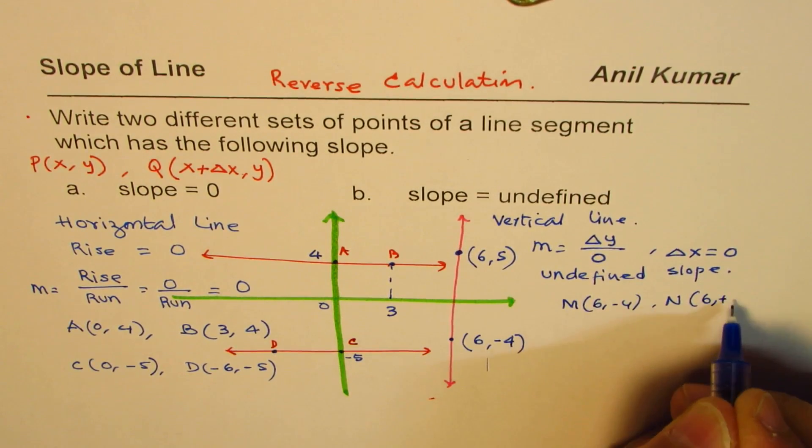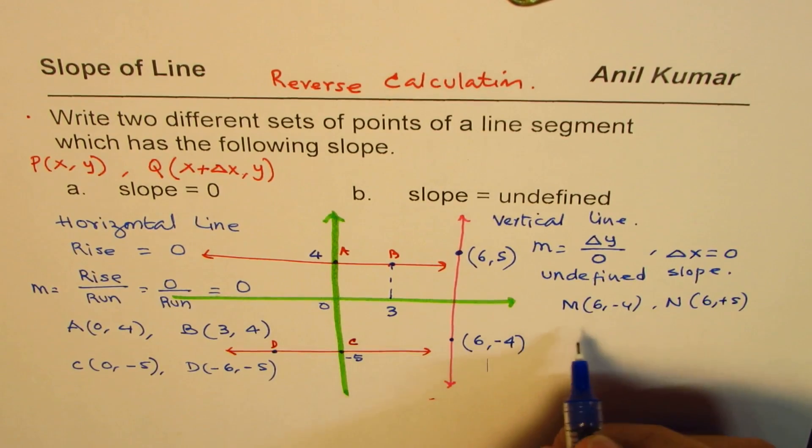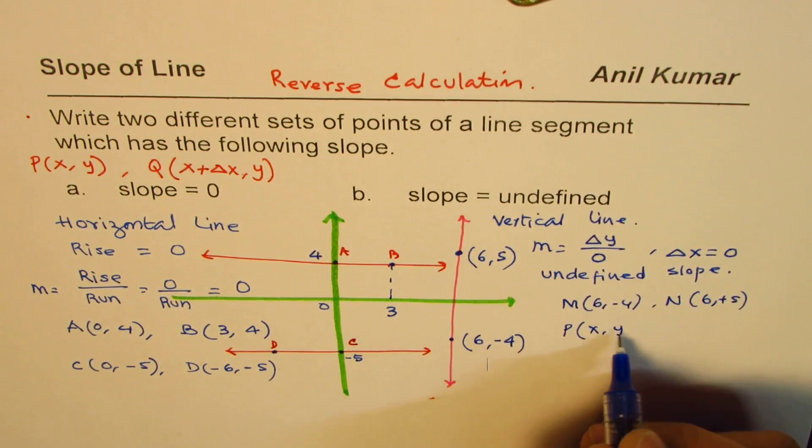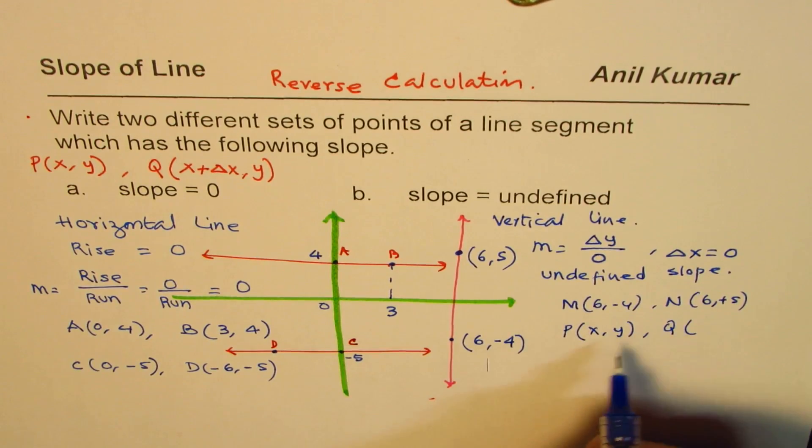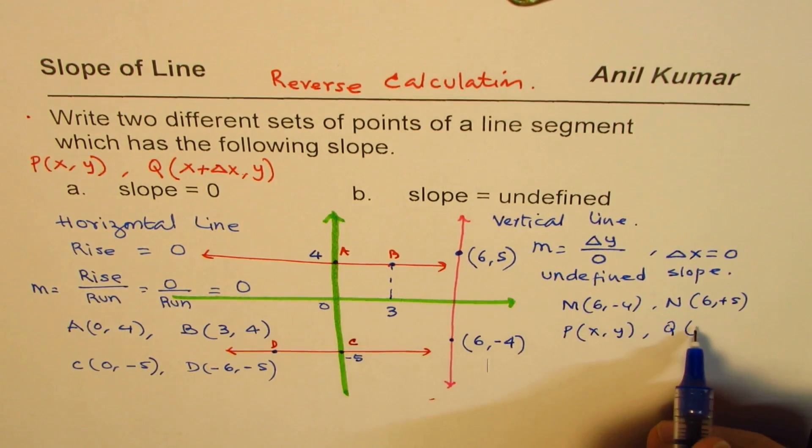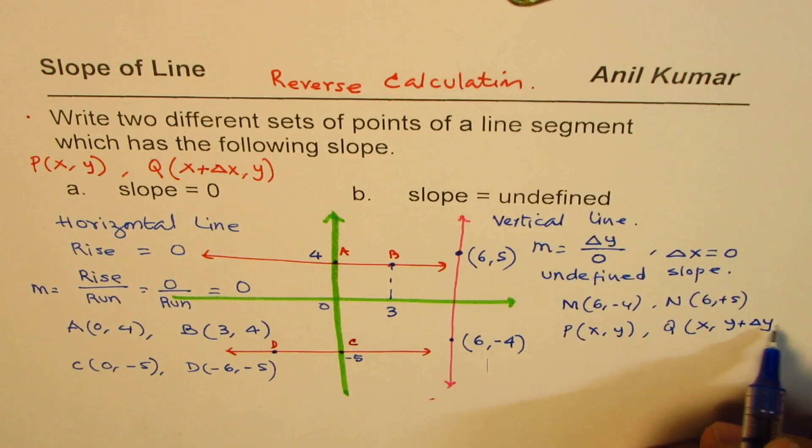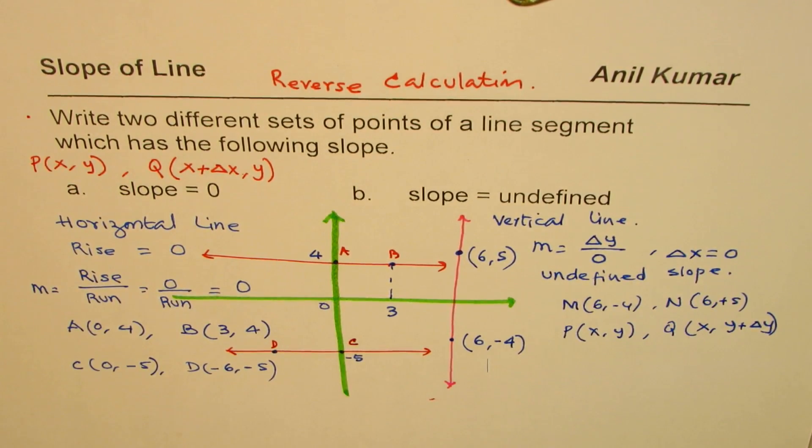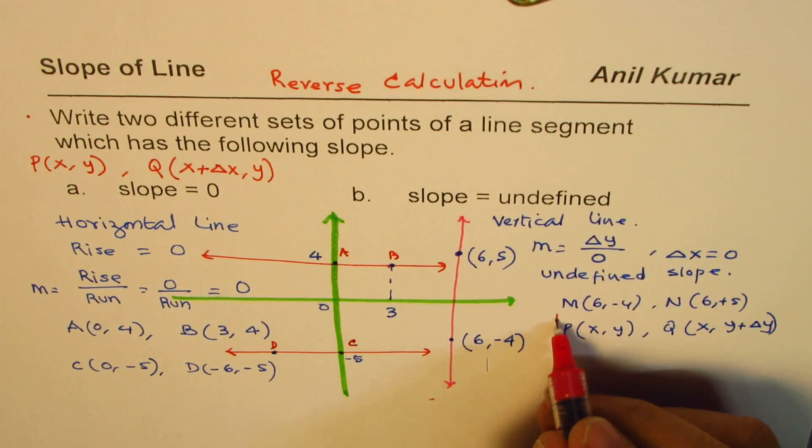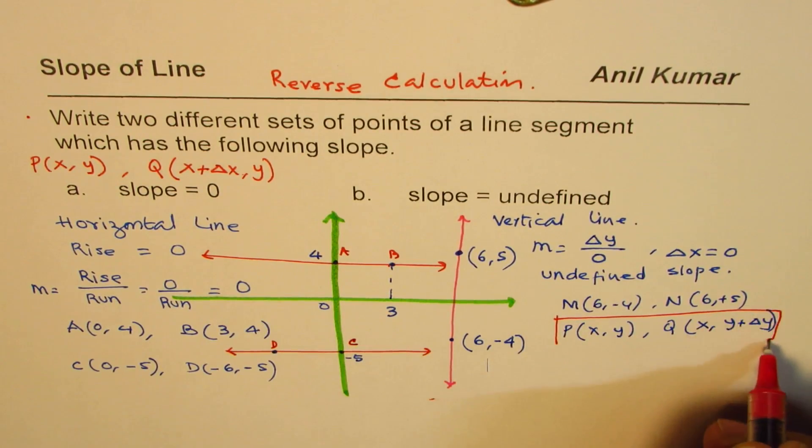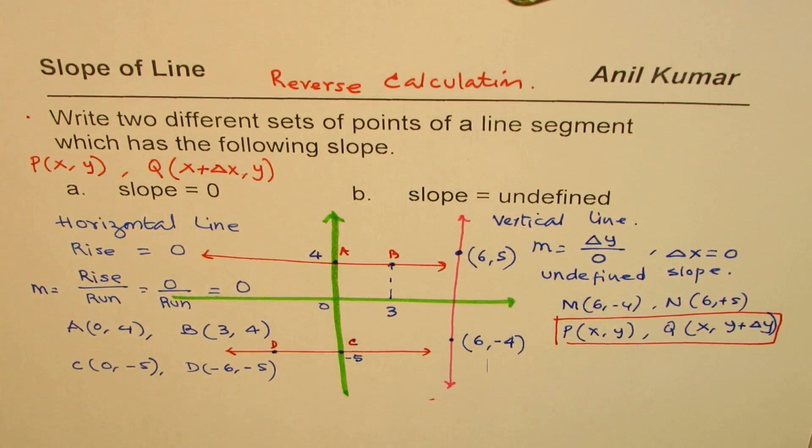In this you'll find two points which have values x and y, and the other point: the x value remains same but the y could be different, so y plus delta y. Any set of points could be written using these coordinates.